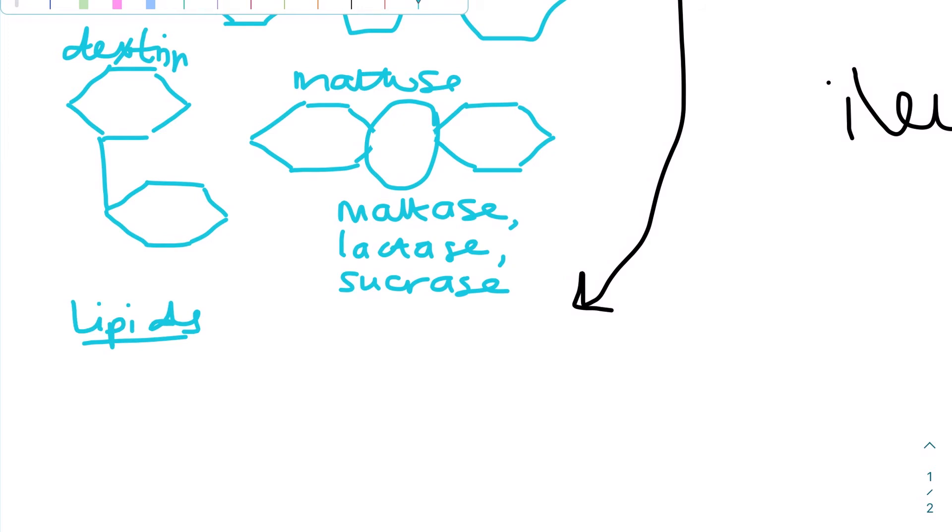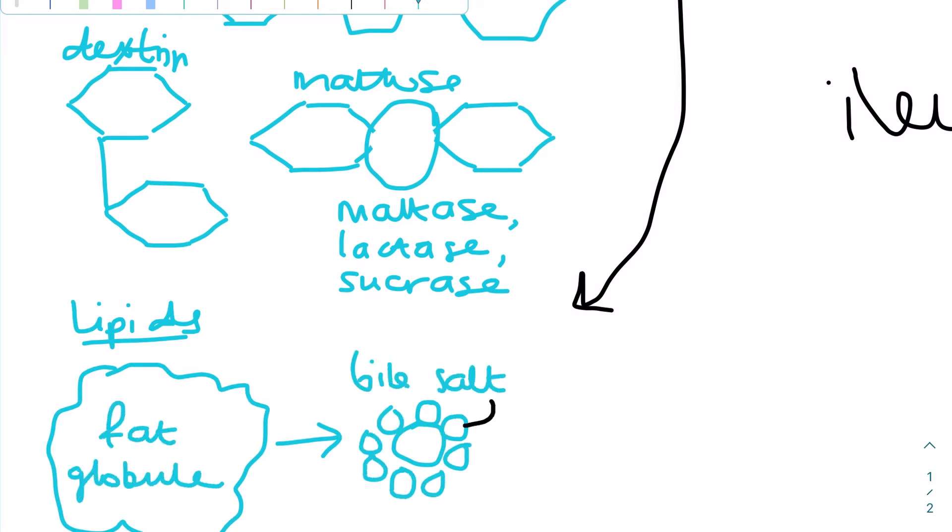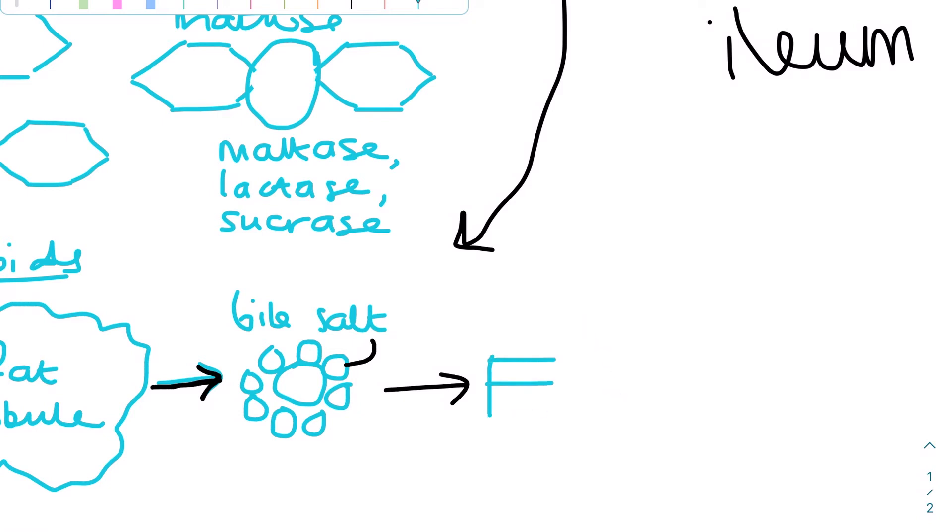Lipids are contained in fat globules, which are broken apart with bile salts. Triglycerides and phospholipids are then broken down into glycerol, fatty acid chains, and phosphate.